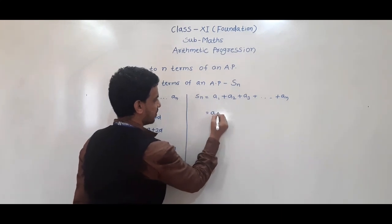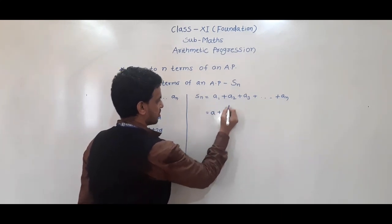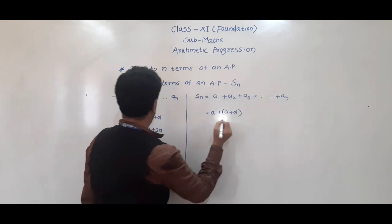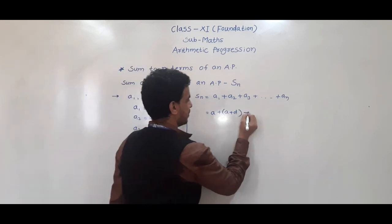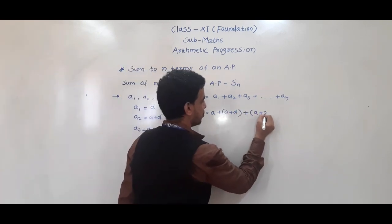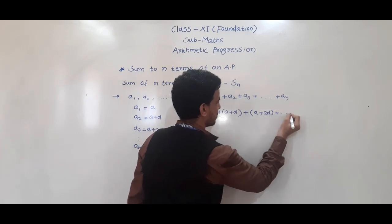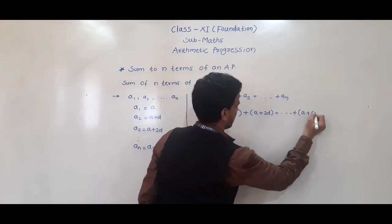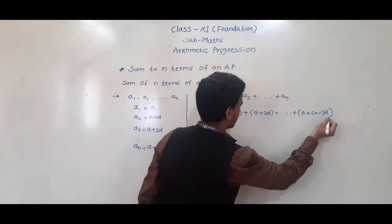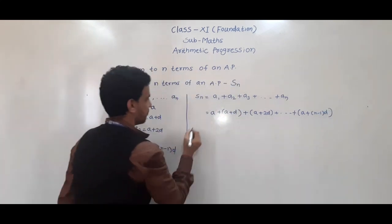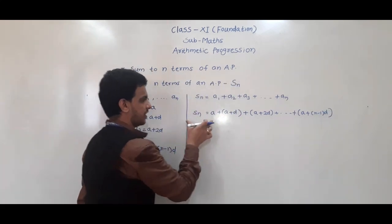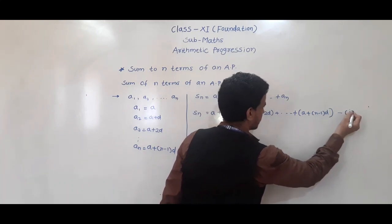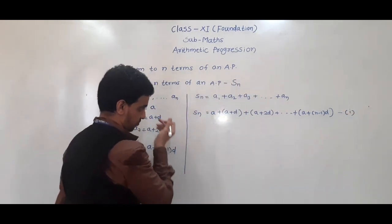So Sn = a + (a + d) + (a + 2d) + ... + [a + (n−1)d]. We will get Sn equal to this sum. I am giving this as the first equation.